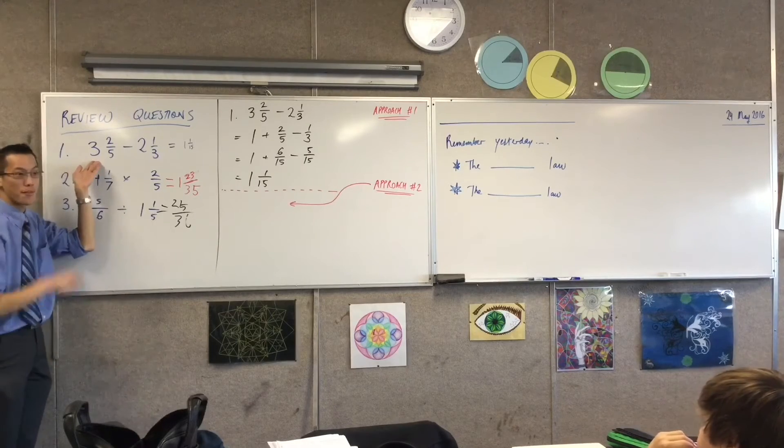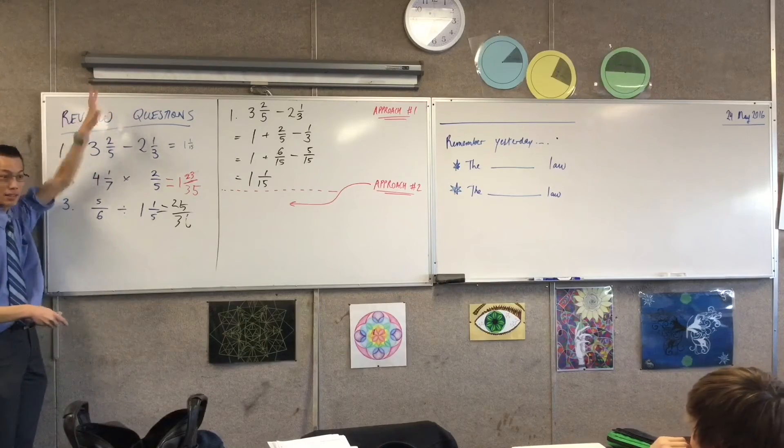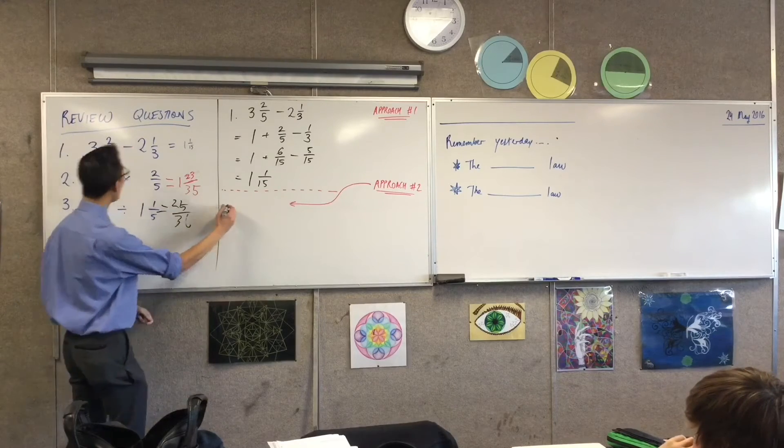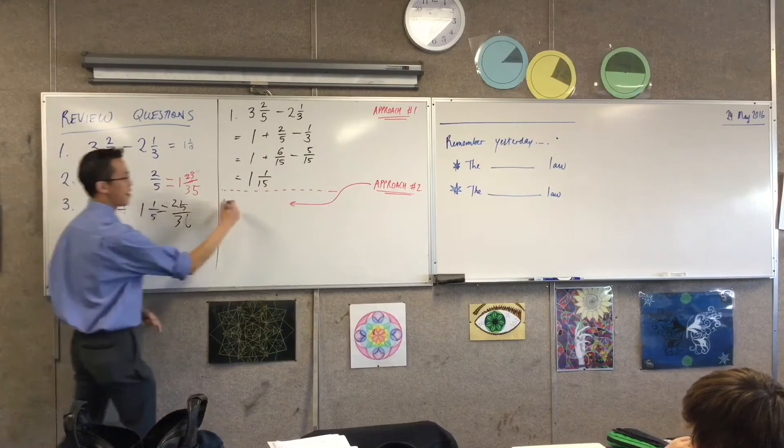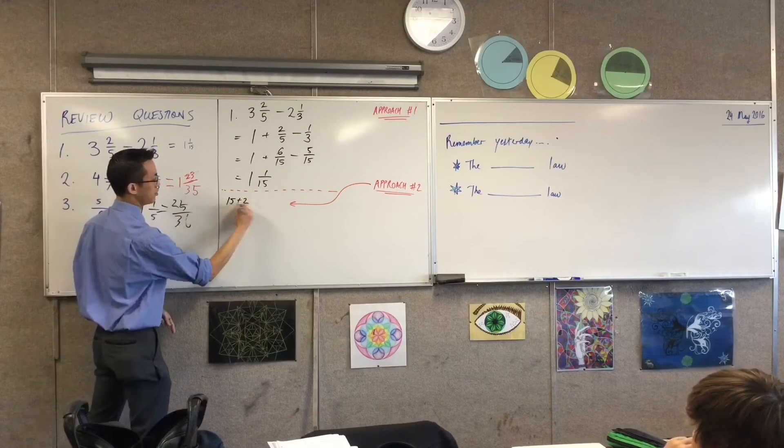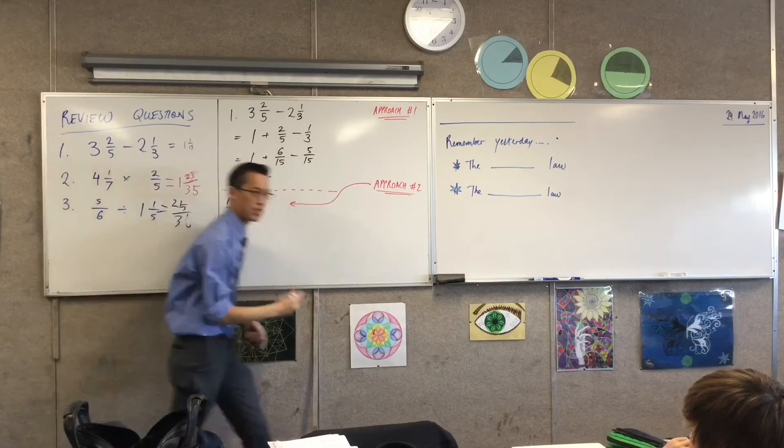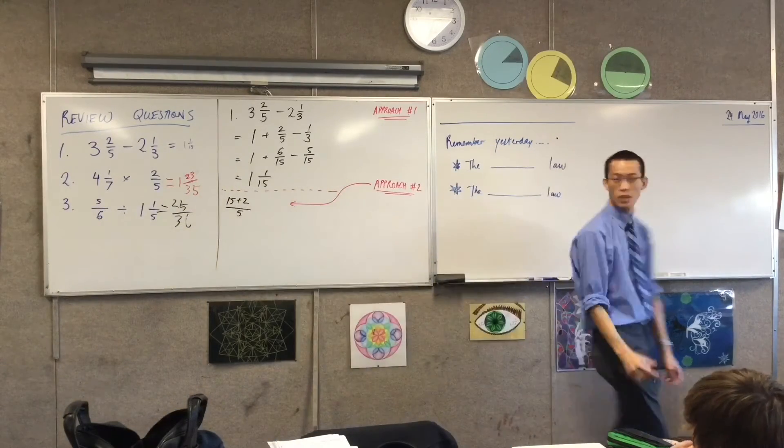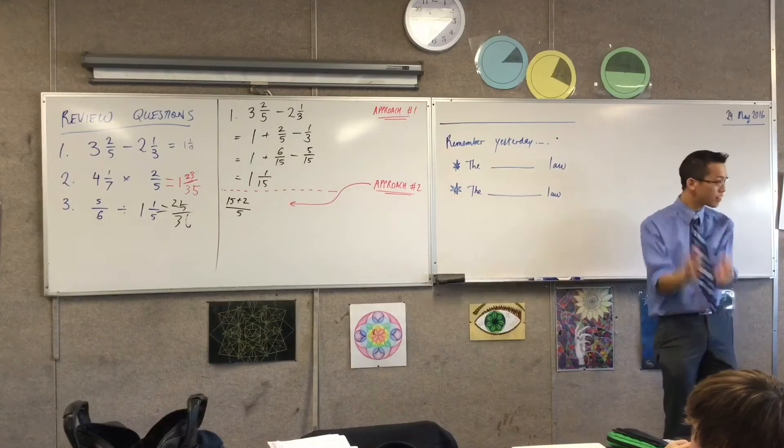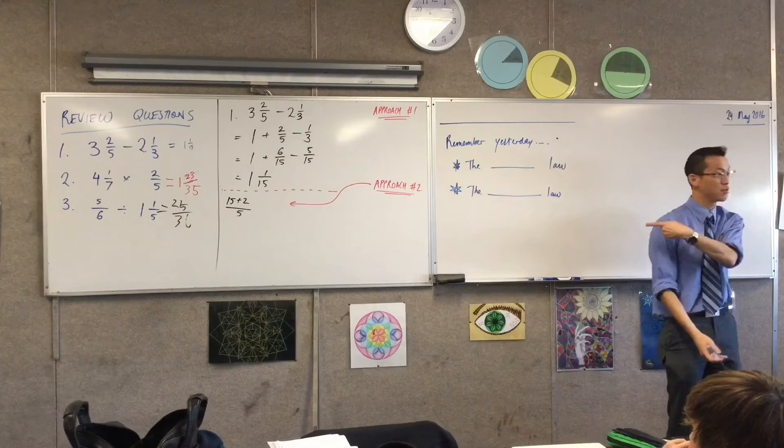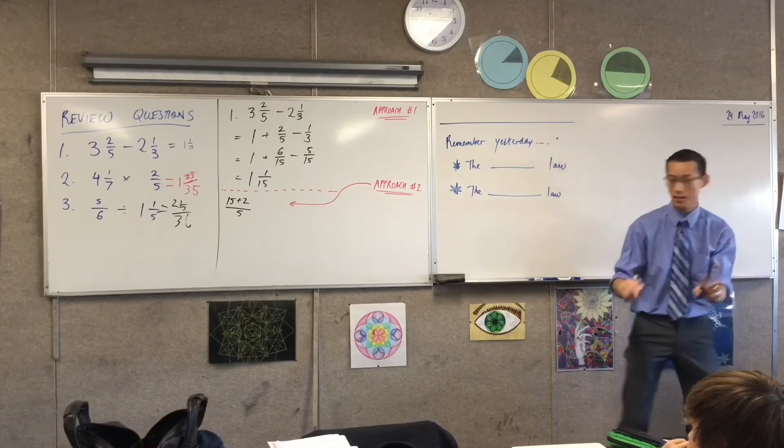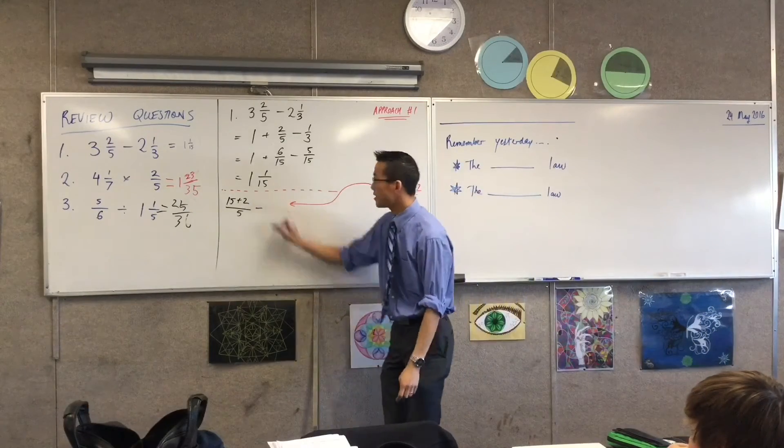Here's the way I'm going to write my first line. I'm going to write this as fifteen plus two over five. Do you see where those numbers come from? The fifteen over five is the three that's at the front. The two over five is the fraction that was there in the first place. Does that make sense? Minus.